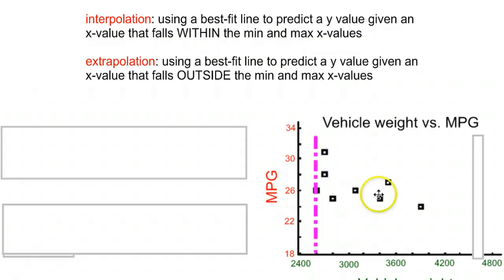So in this case, the vehicle weight versus miles per gallon, if you look at our lowest x value here, it's going to be around 2600. Our highest x value is going to be around 4600. So anything that's between 2600 and 4600 is interpolating. We find an x value in there, we're interpolating with the data.